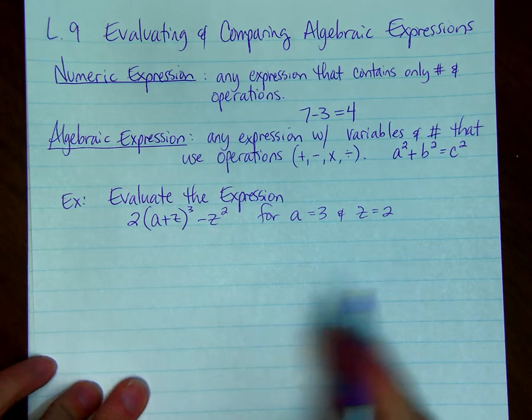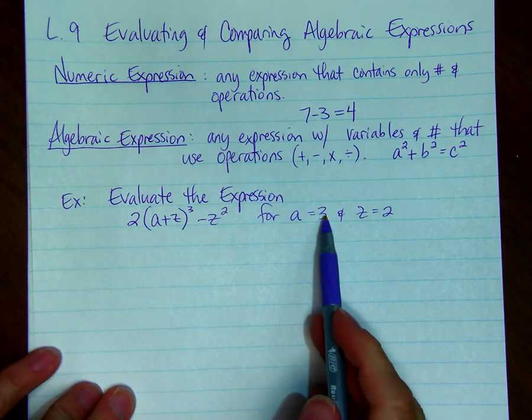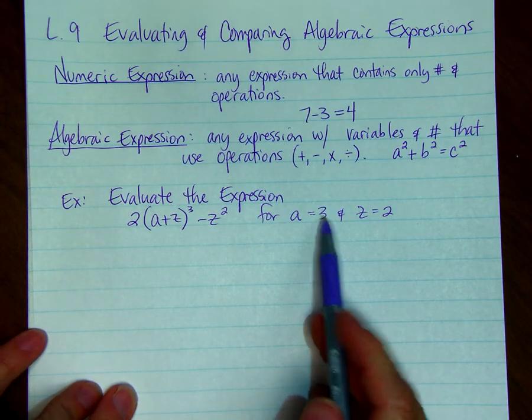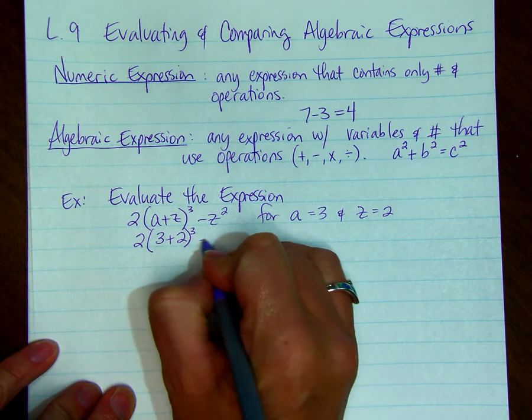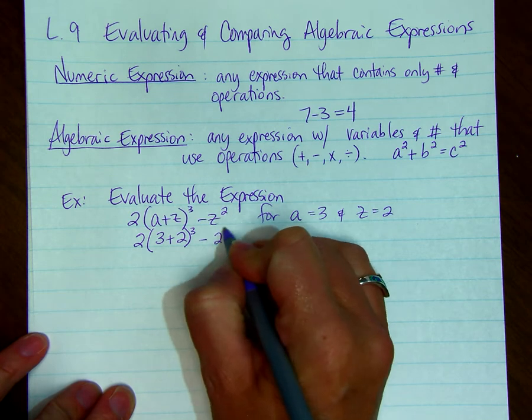So what I do is I just rewrite the problem, but instead of writing A, I'll write a 3. Instead of writing a Z, I'll write a 2. So 2 and then parenthesis, I have 3 plus 2, end parenthesis cubed, minus 2 squared.